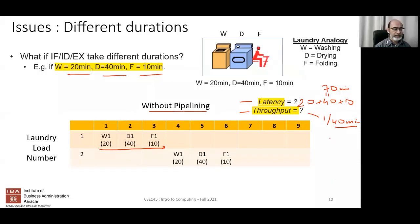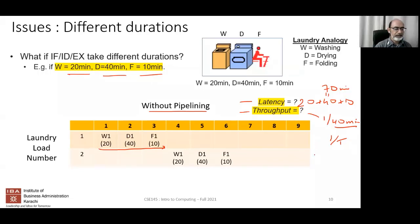Another student says the throughput without pipelining should be one per 70 minutes. The instructor clarifies: without pipelining, after every complete cycle (70 minutes) one output comes out, so throughput is one per 70 minutes — not one per 40. The units for throughput are one over time.